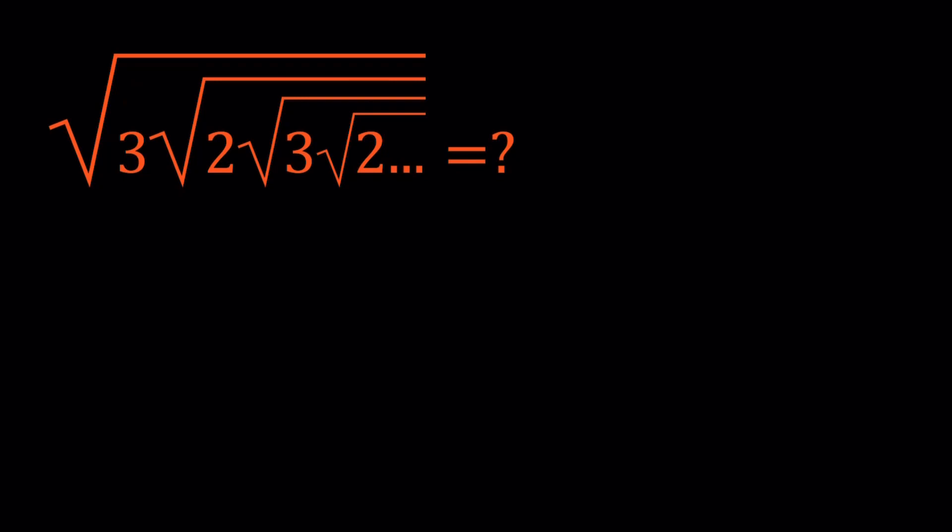A lot of times with infinite radical expressions or infinite fractions sometimes, or continued fractions, you can set the whole thing equal to a variable like x. You don't have to use x, by the way, you can use y and nobody is going to ask you why. Anyways, I'm going to use x. And then here's what I'm going to do. Square root of three times the square root of two times the square root of three times the square root of two, so on and so forth, is equal to x. So what?